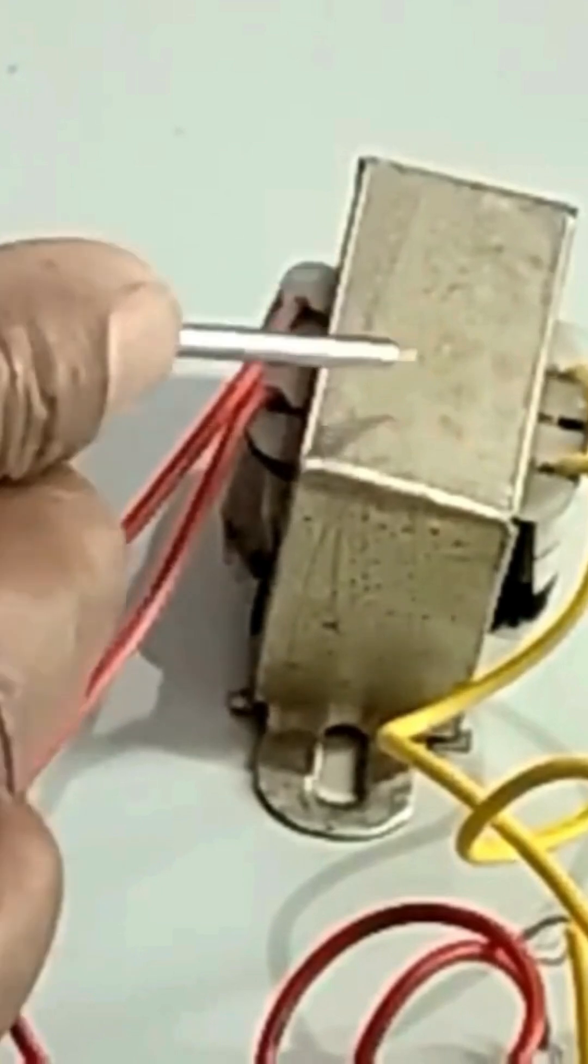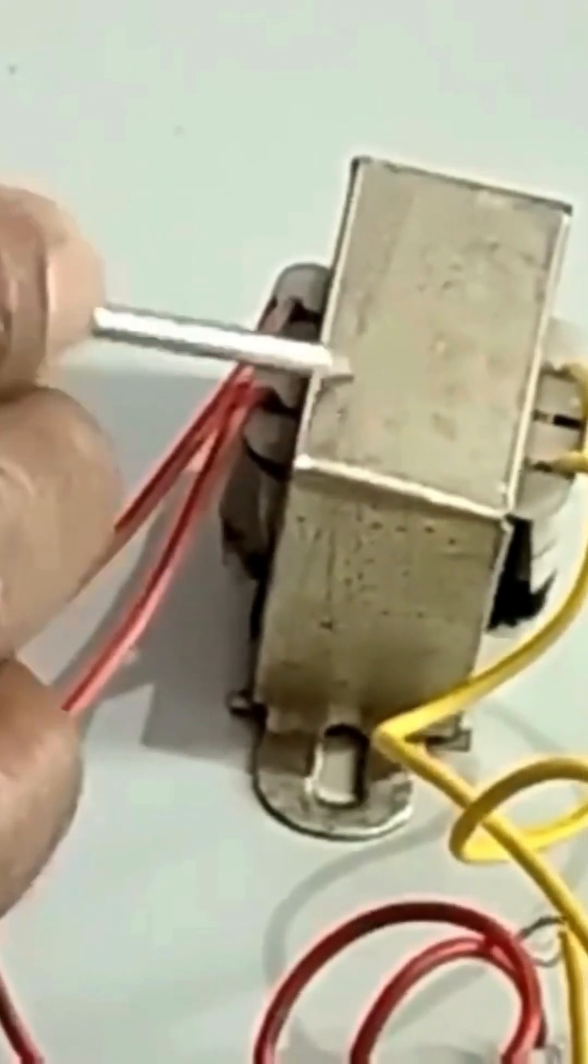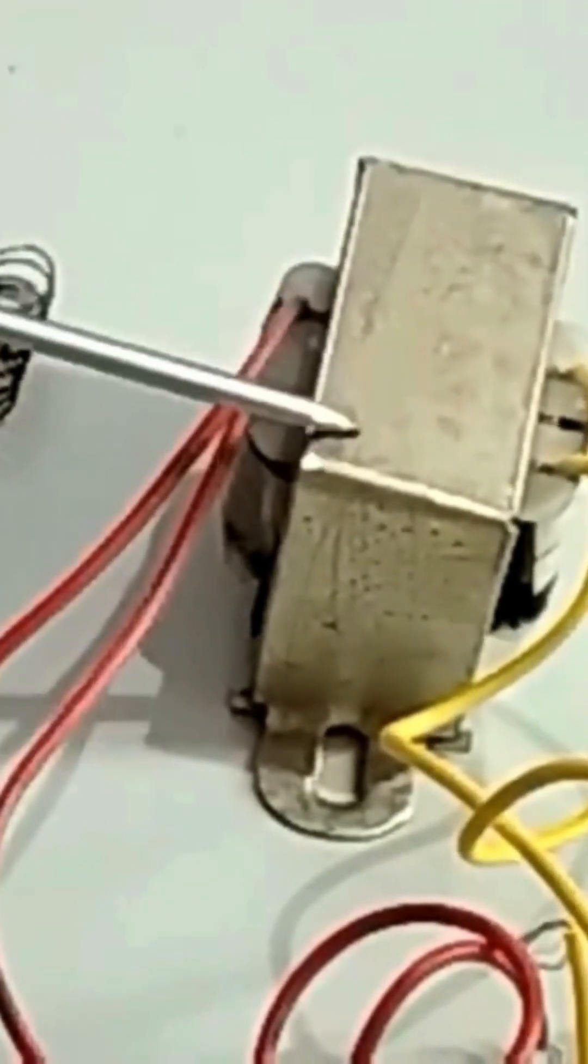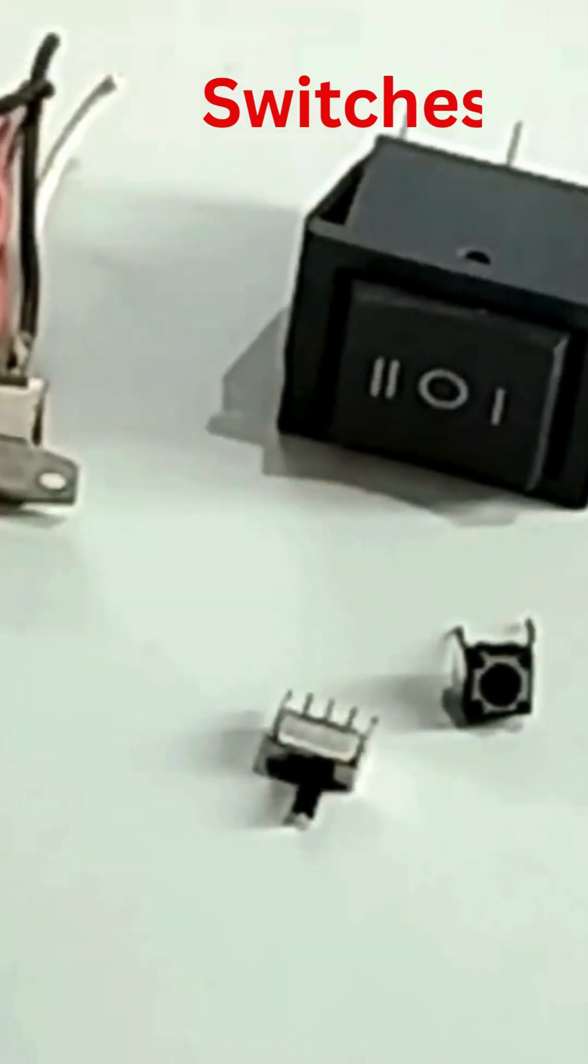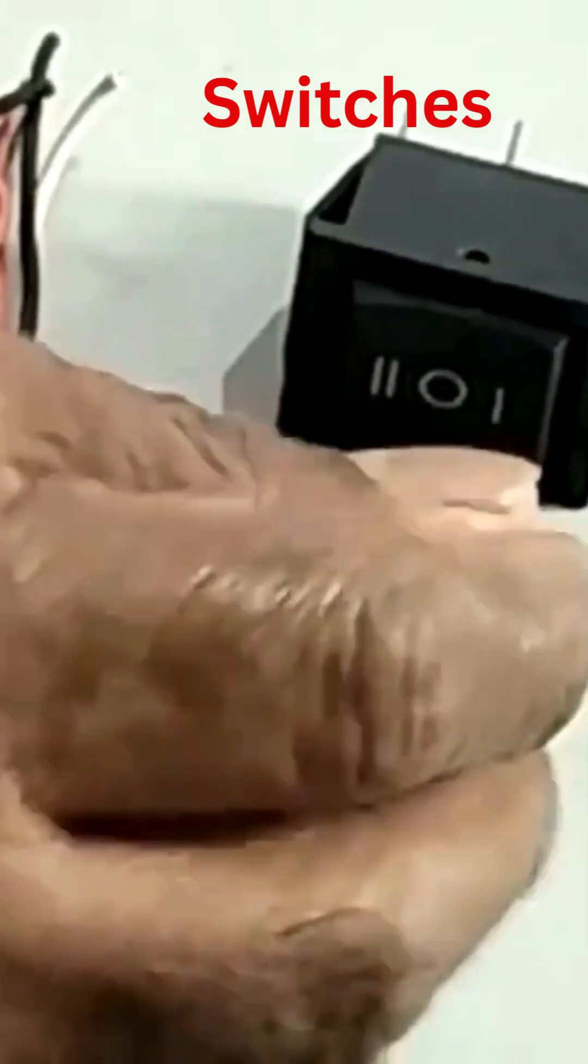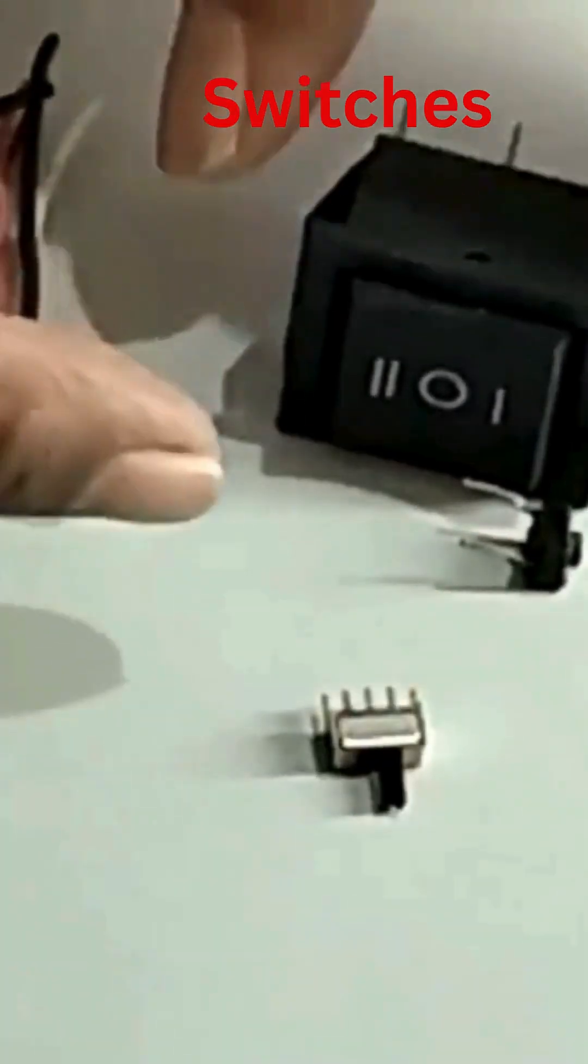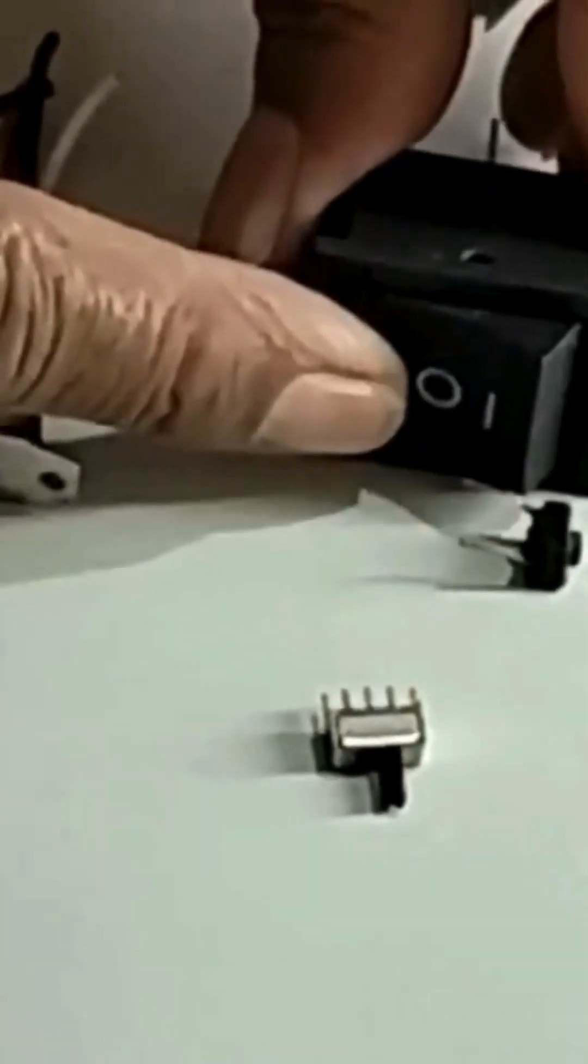Copper winding inside inductors and transformers makes them passive components as well. These are switches: this is a micro switch, this is a light switch, and this is a bigger type of switch.